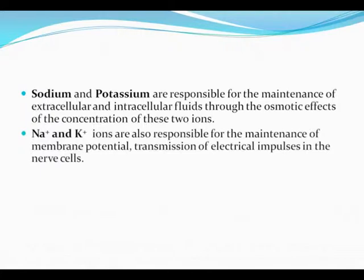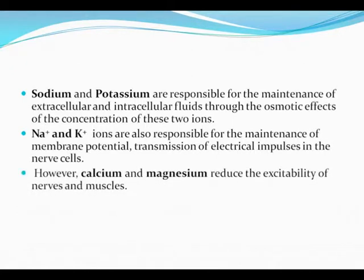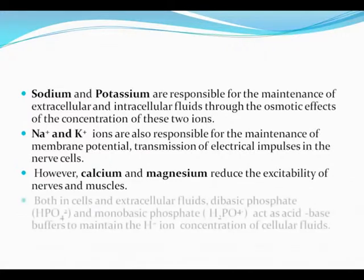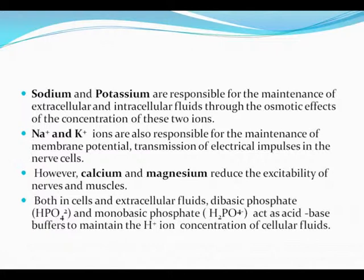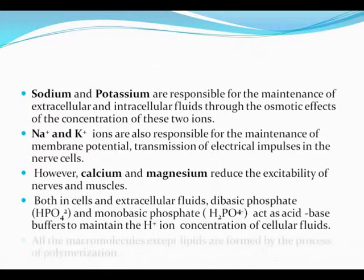Sodium and potassium ions are also responsible for the maintenance of membrane potential and transmission of electrical impulses in nerve cells. However, calcium and magnesium reduce the excitability of nerves and muscles both in cells and extracellular fluids. Dibasic phosphate and monobasic phosphate act as acid-base buffers to maintain the hydrogen ion concentration of cellular fluids.